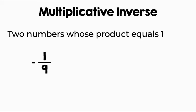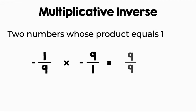Are negative one ninth and negative nine multiplicative inverses? Well, let's multiply them and find out. We can rewrite any whole number over one, so let's write negative nine as negative nine over one. Then let's multiply straight across. We will get nine over nine. A negative times a negative is a positive, so when we simplify nine over nine, we will get one. So yes, they're multiplicative inverses.